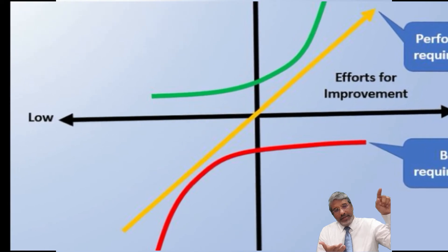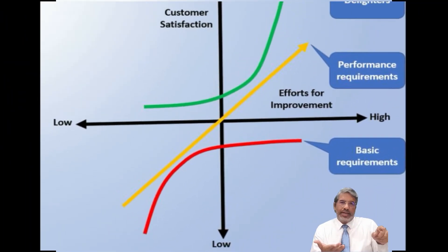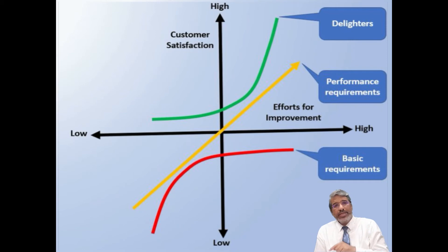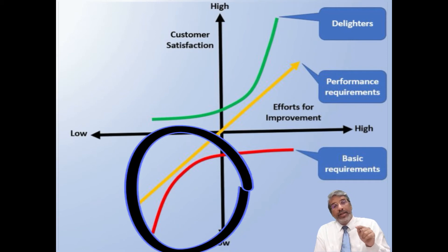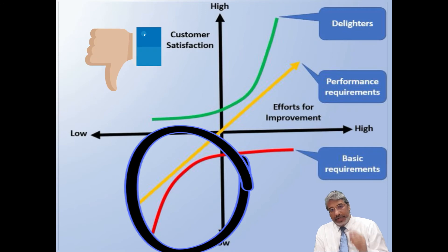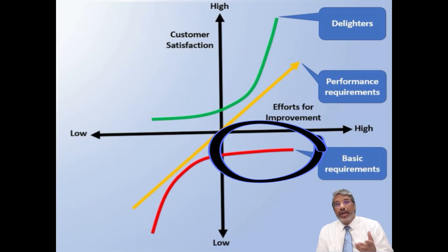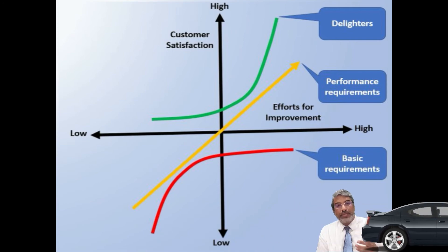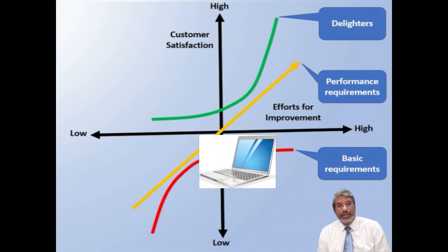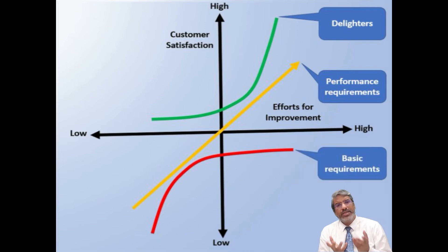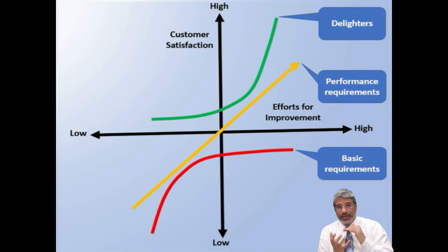The performance curve is always a straight line, while the basic requirements curve is not a straight line. If basic requirements are not fulfilled, you will always get customer dissatisfaction. If they are fulfilled, it does not generate further satisfaction — a car moving or a laptop performing calculations is expected. So there is no satisfaction when basic requirements are fulfilled, but there is high dissatisfaction when they are not.